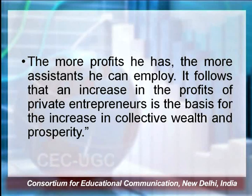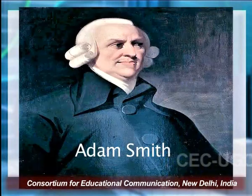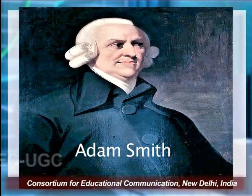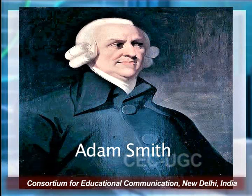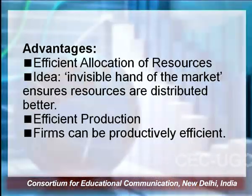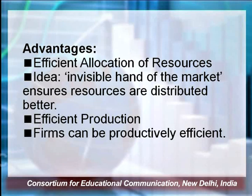Reading this essence of capitalism from Adam Smith's perspective in Wealth of Nations brings us to the important aspect of the advantages of capitalism. At the outset, it is said that capitalism helps in efficient allocation of resources — drawing from Smith's idea of the invisible hand of the market, which works to ensure that resources are distributed in a better manner. Mechanisms are worked out to ensure efficient production, and firms are made to work productively because of the forces of demand and supply.